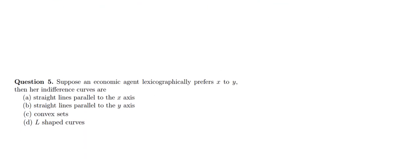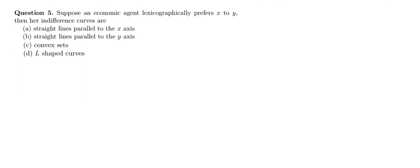Now let us move on to our next question, question number 5. Question 5 says: suppose an economic agent lexicographically prefers x to y, then her indifference curves are—so here we have an agent with lexicographic preference over x than y.